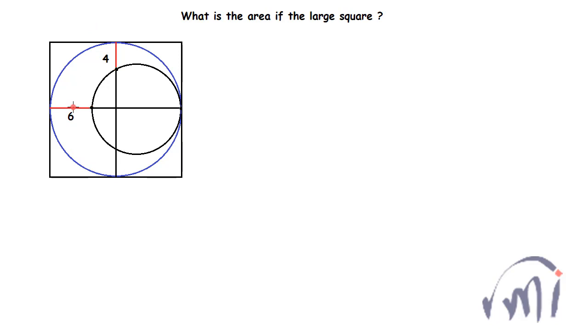How to find this area? These two circles share this tangent, which means the line joining the centers of those two circles will be perpendicular to this tangent. This will be the center for the blue circle, and the center for the black circle will be somewhere over here.